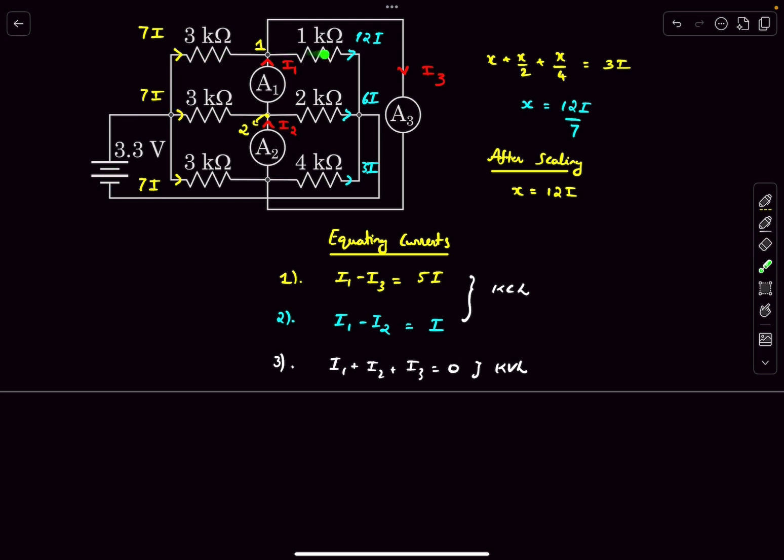So let's just consider this branch containing the 3 kilo ohm and the 1 kilo ohm and the battery and apply KVL over there. 3.3, which is the EMF of the battery, equals 7 times 3i which is 21i, so I am just leaving it as kilo ohm so the current will be in milliampere, plus 12i. So from here i turns out to be 0.1 milliampere.